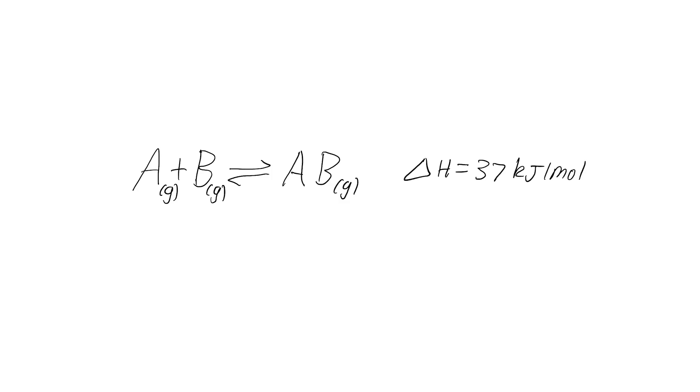The easiest way to understand Le Chatelier's principle is by reference to an example. So let's look at a model system. We've got a reaction in which A and B, both gases, react in equilibrium to form the product AB, which is also a gas. Let's see what happens when we change a few of the component conditions of the system.